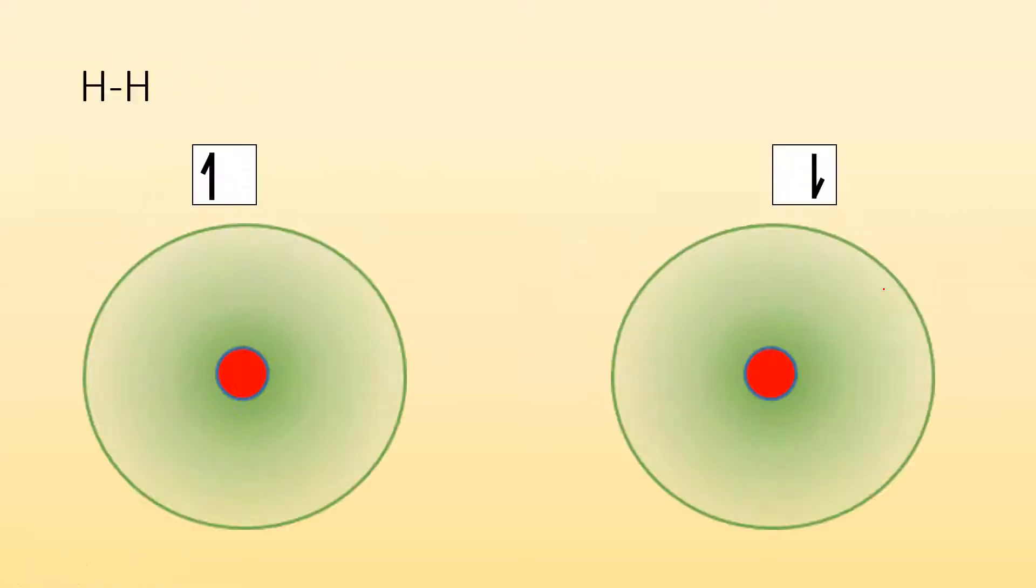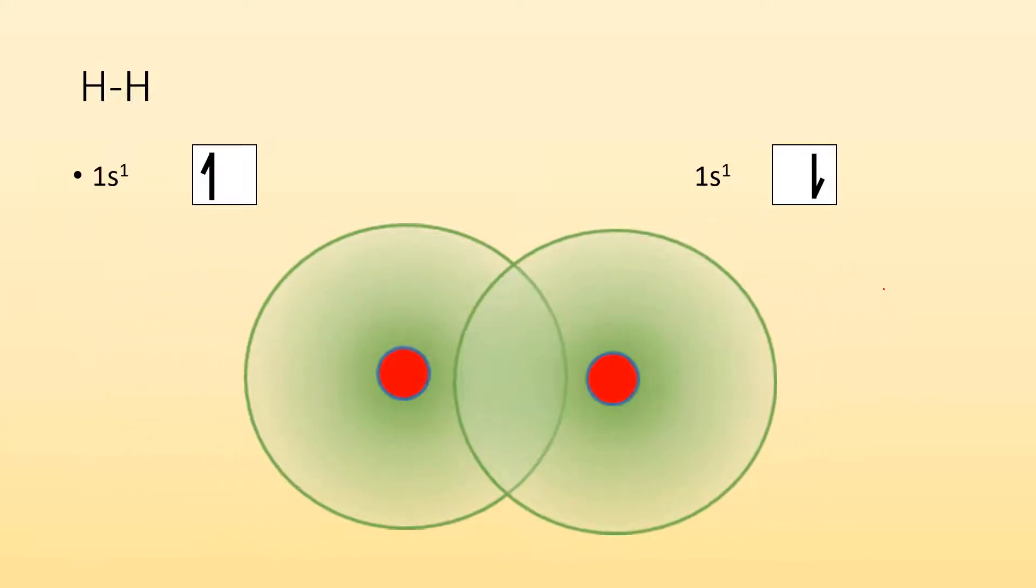Electrons are being shared this way. If you take a look at a simple example of a hydrogen molecule, they each have one electron. They want to fill that s orbital. They want that to be full. Well, if they overlap, they're sharing that one electron they have with the other atom, and the other atom's reciprocating and sharing its electron. So it's like they're sharing a total of two electrons.